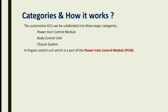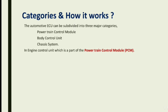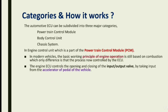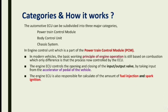Under the Powertrain Control Module, the Engine Control Unit comes into picture. In modern vehicles, the basic working principle of engine operation is still based on the internal combustion engine. The only difference between driving before the 1970s and today is that the engine is the same, but the process is now controlled by the ECU. The engine ECU controls the opening and closing of the input and output valves by taking input from the accelerator pedal via drive-by-wire, and it is also responsible for calculating the amount of fuel injection, spark ignition, and RPM generation.